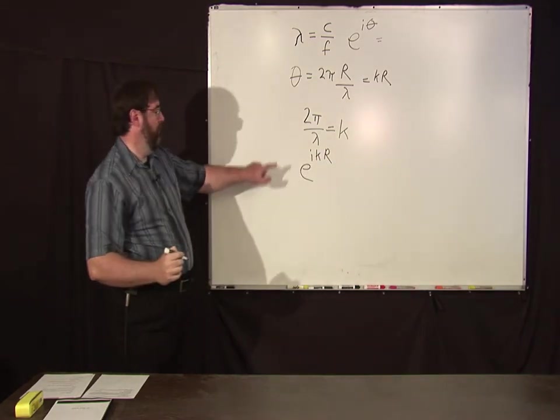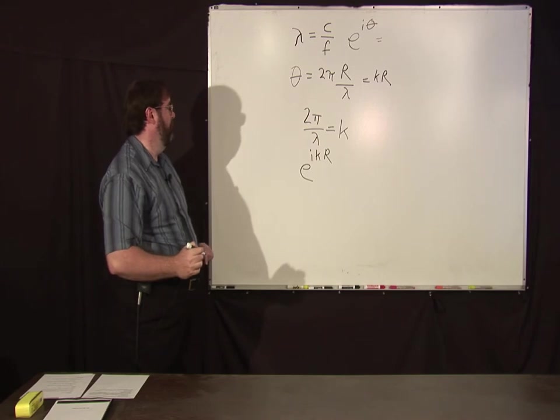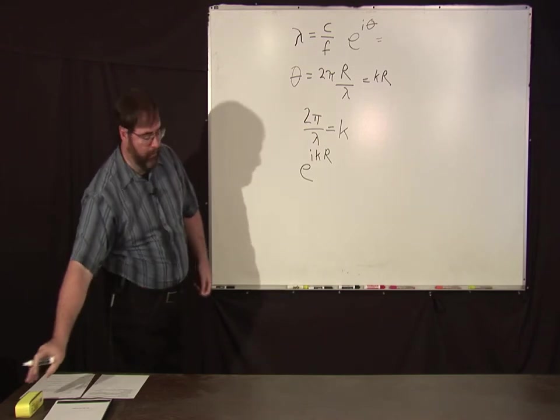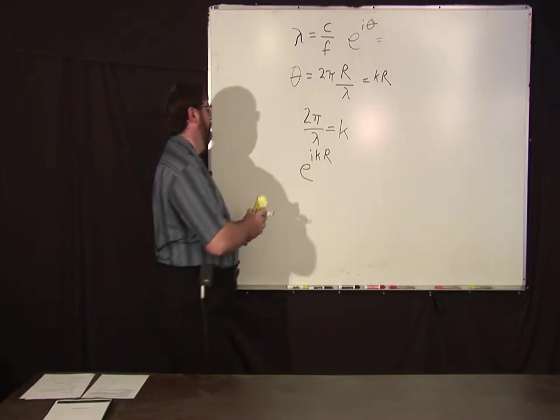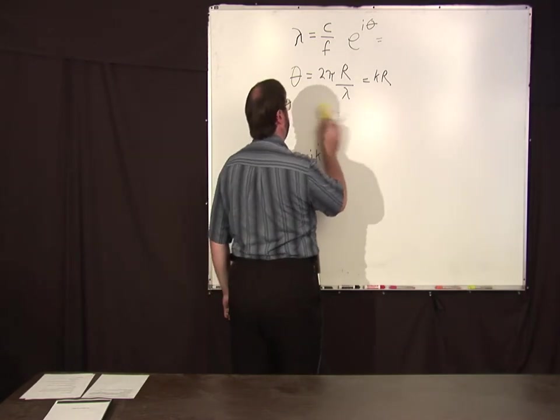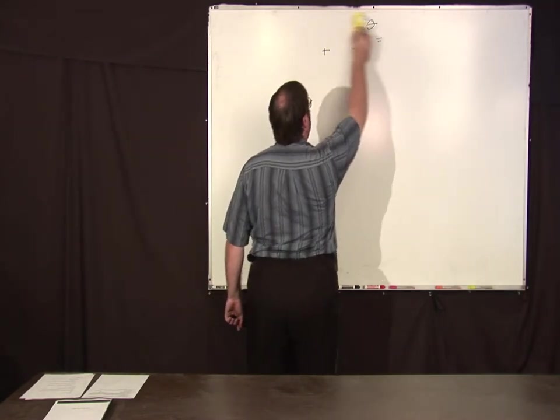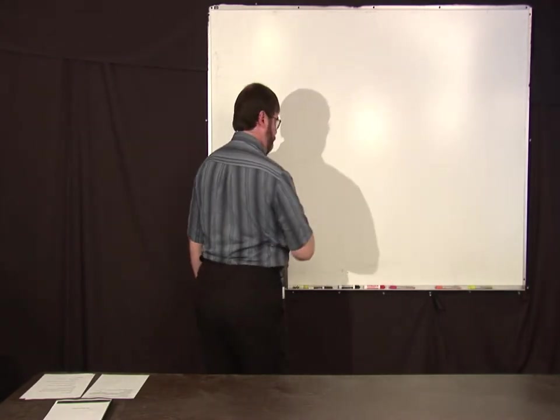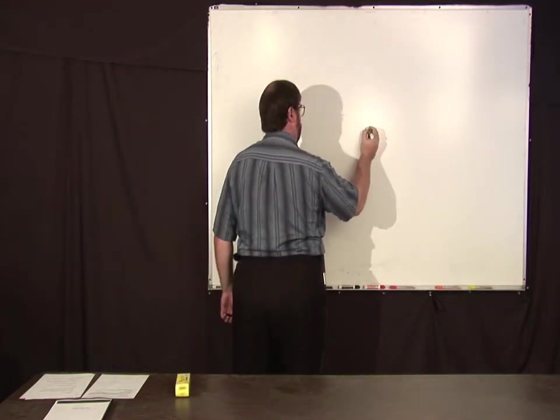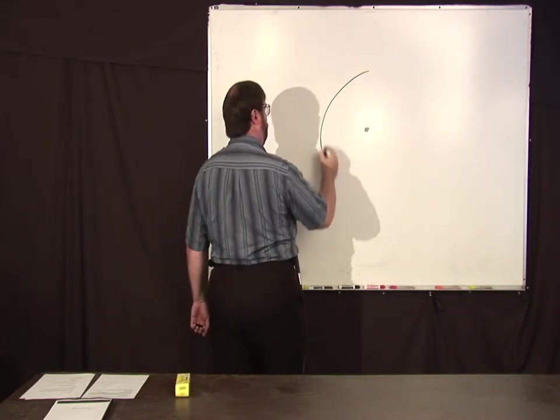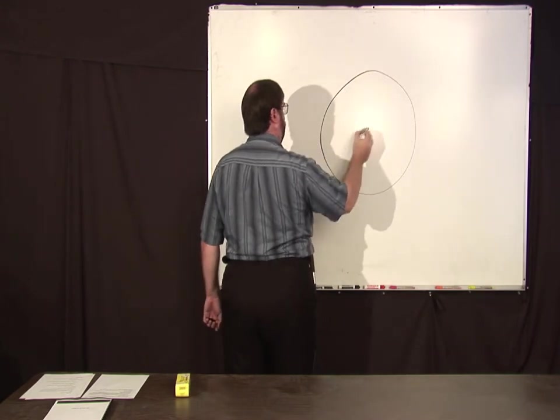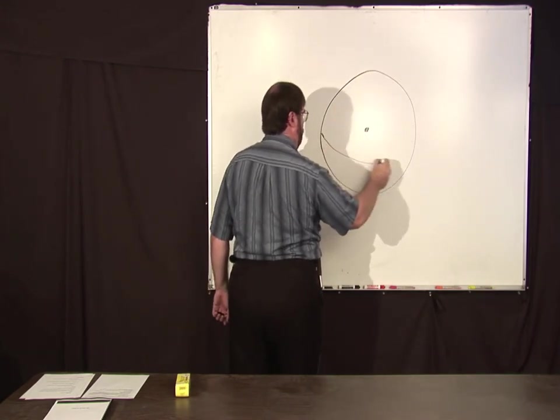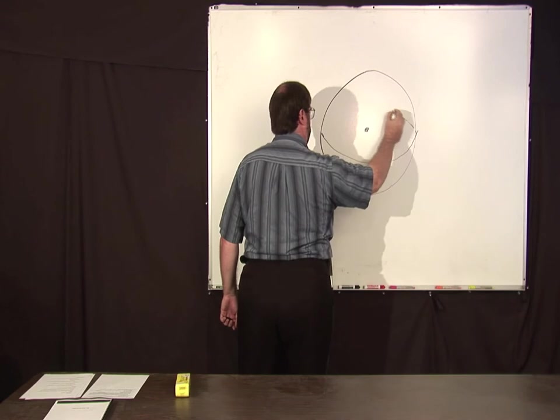Okay, we're going to talk about isotropic radiators that do spherical waves. So an isotropic radiator, let's say a point, you draw a sphere around it, is some mythical object that radiates power equally in all directions.